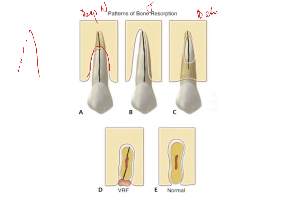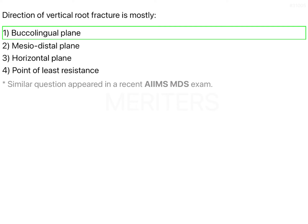Coming to the original question: for vertical root fractures, the point of least resistance is along the buccolingual plate. This means the fracture line runs in the buccolingual direction, splitting the root into a mesial and a distal fragment — similar to how mandibular molars split. Therefore, the answer is the buccolingual plane. Treatment for such cases is usually extraction, as the root and tooth cannot be saved.